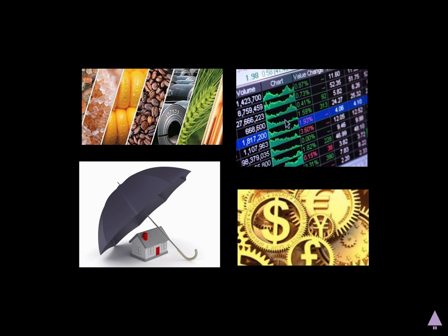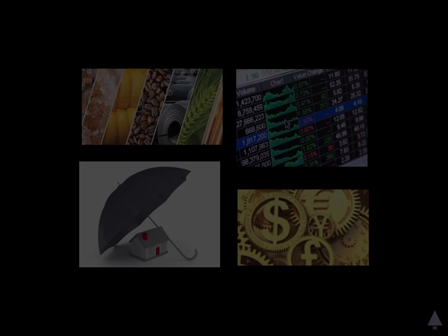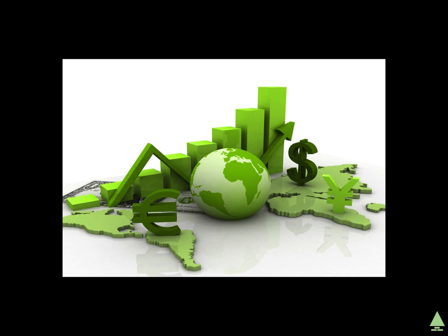Capital markets and money markets are known as financial markets. Other types of financial markets are commodity, derivative, insurance, and foreign exchange markets — and there are actually a few other ones. These markets form part of the financial economy.